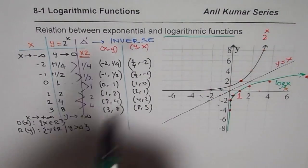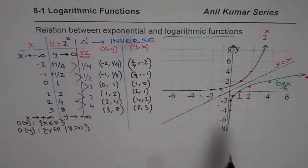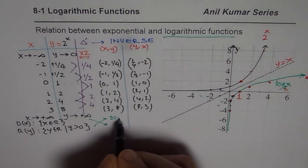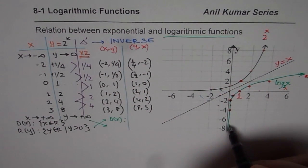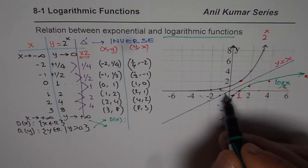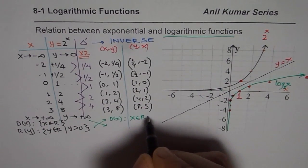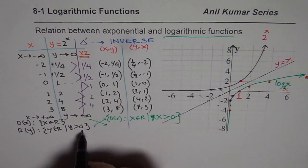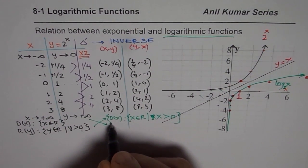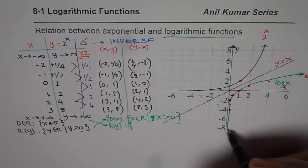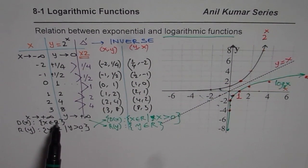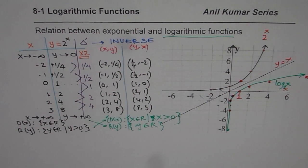Since logarithmic and exponential functions are inverses of one another, their domains and ranges also flip. For the logarithmic function, x must be greater than 0 — you can see from the graph that x can never be negative. So the domain of the log function is x > 0, which was the range of the exponential function. The range of the log function is all real numbers, which was the domain of the exponential.